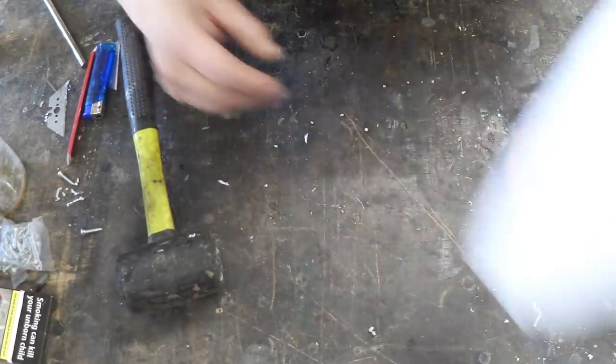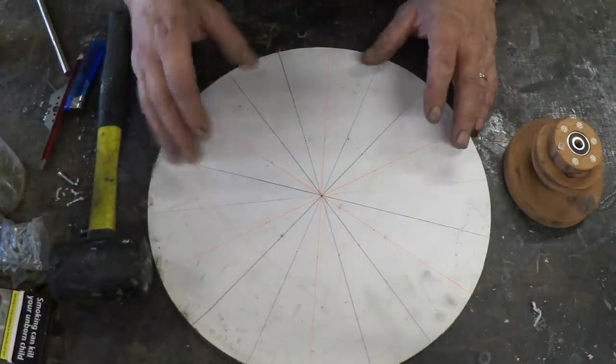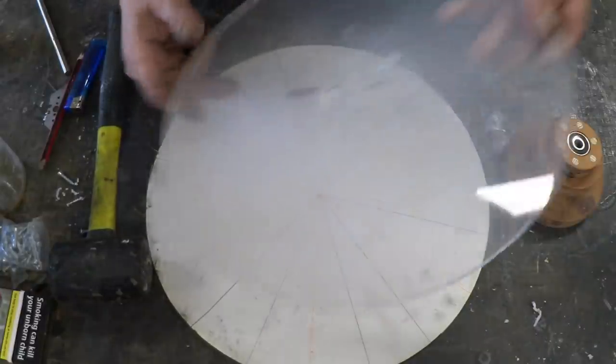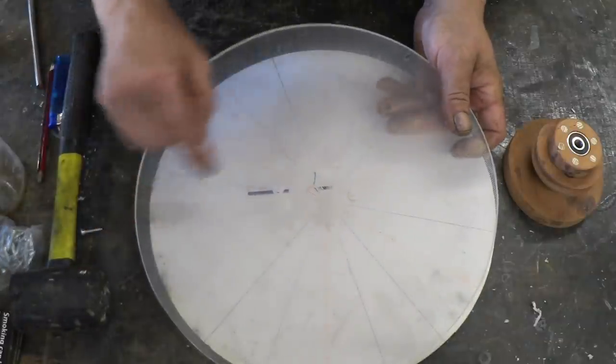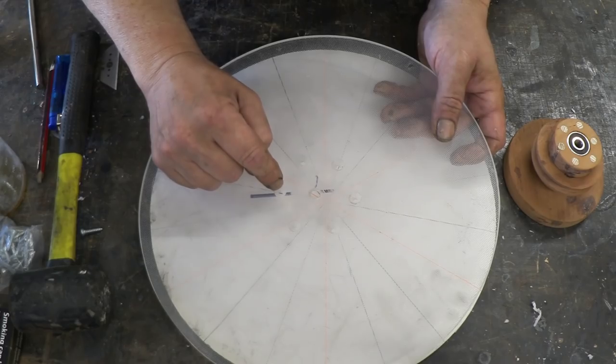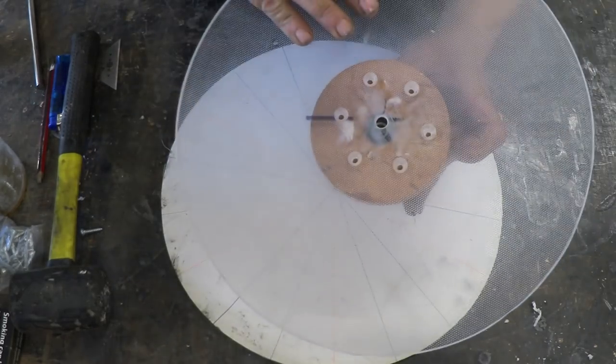Now then you're going to find it immensely useful if you make something like this up. It's a paper template. All I've done is draw the circle and then mark it up in degrees. What that means is I can take measurements from that because the disc, what I've done is I've drilled holes through to take screws and then countersunk them on the smooth face.